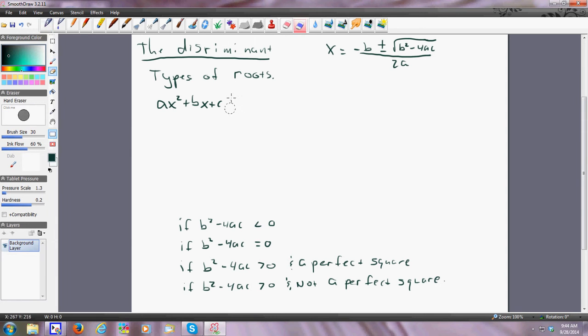And the discriminant is what is underneath the radical sign. In particular, or I guess I should say specifically, b squared minus 4ac.